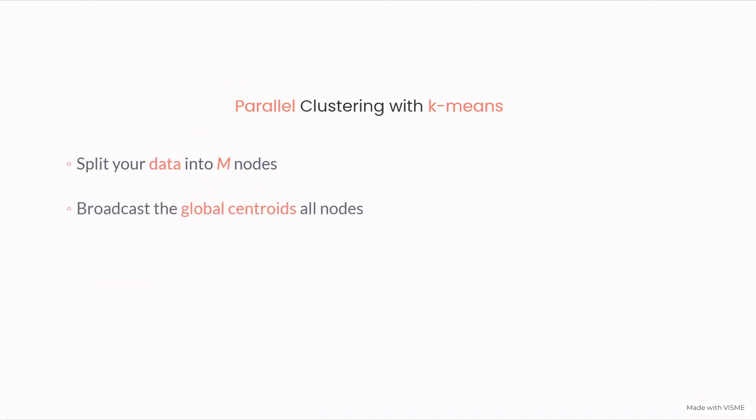The first caveat is that we start in a master node with some global centroid and we're going to broadcast throughout all the nodes. Inside each node, we're going to pretend that nothing else exists and we're going to compute the position of the local centroid with your local data.